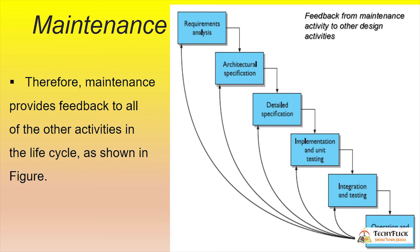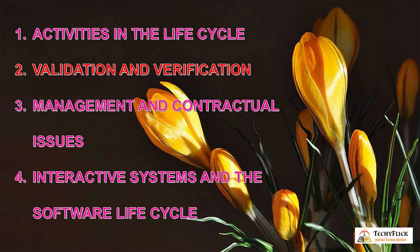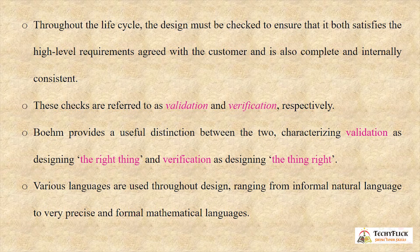We have to collect feedback from one phase. First: integration and testing — that is the implementation feedback. Next: detail specification, architectural specification, requirement analysis. Next: validation and verification. Validation means we will do the correct thing — the right thing, satisfying the requirement. Verification means we will do the design right — checking that we are doing the correct thing.